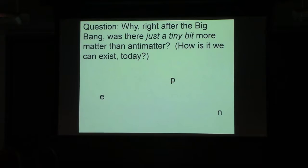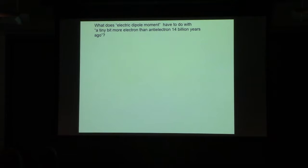So why was there a tiny bit more matter than anti-matter? How is it that we can exist today? I think we can all agree that this is an important question. And the answer is we don't know, but we're trying to understand. I'm here to talk to you about something called the electric dipole moment. But what does that have to do with there being a tiny bit more electron than anti-electron 14 billion years ago?